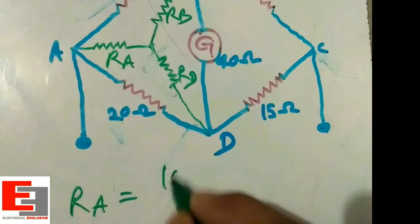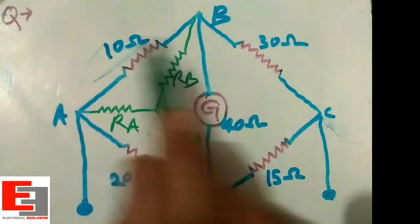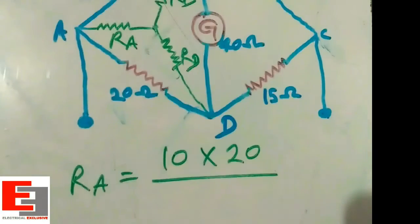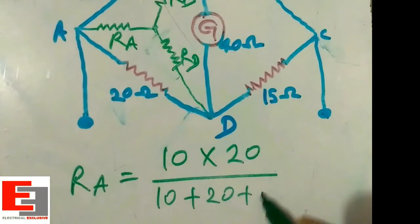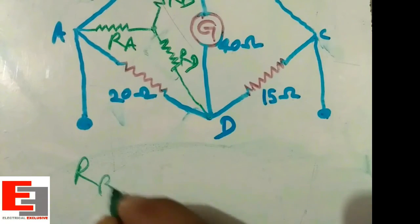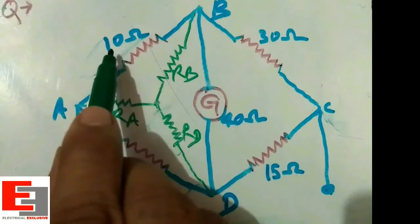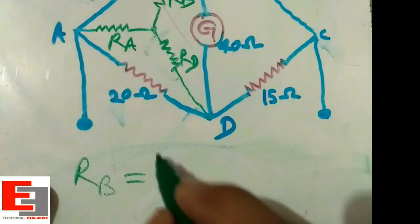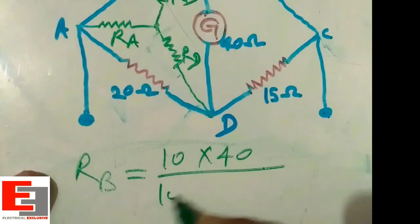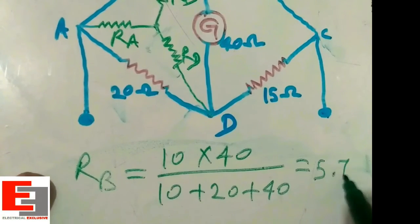RA = 10 × 20 divided by the sum of all three resistances of the delta, which are 10 ohm, 20 ohm, and 40 ohm. That gives RA = 2.86 ohm. RB has two adjacent arms of 10 ohm and 40 ohm, so RB = 10 × 40 divided by the sum of all three resistances of the delta. RB = 5.72 ohm.